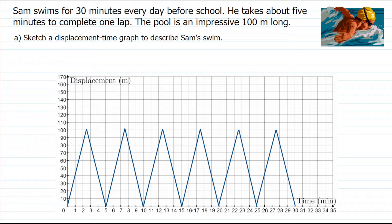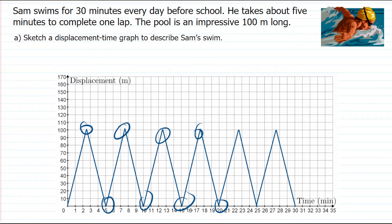There's something we've done here that's not very realistic. Notice these sharp peaks on the graph — those sharp points imply that Sam gets to the other side of the pool and instantly travels in the opposite direction at the same speed. In reality, Sam would have to slow down, turn around, and gradually speed up again. To be more realistic we should curve the tops of these peaks slightly, but for the sake of this lesson we'll stick with the sharp points as they're easier to draw.